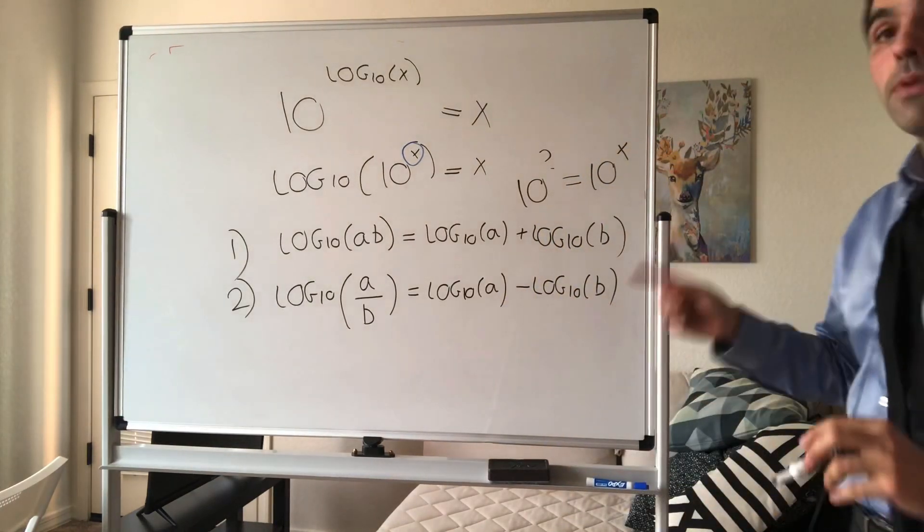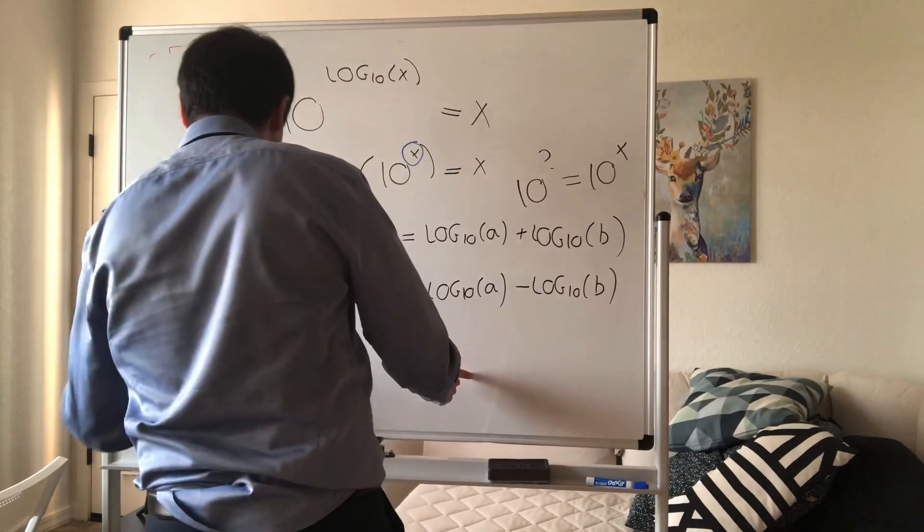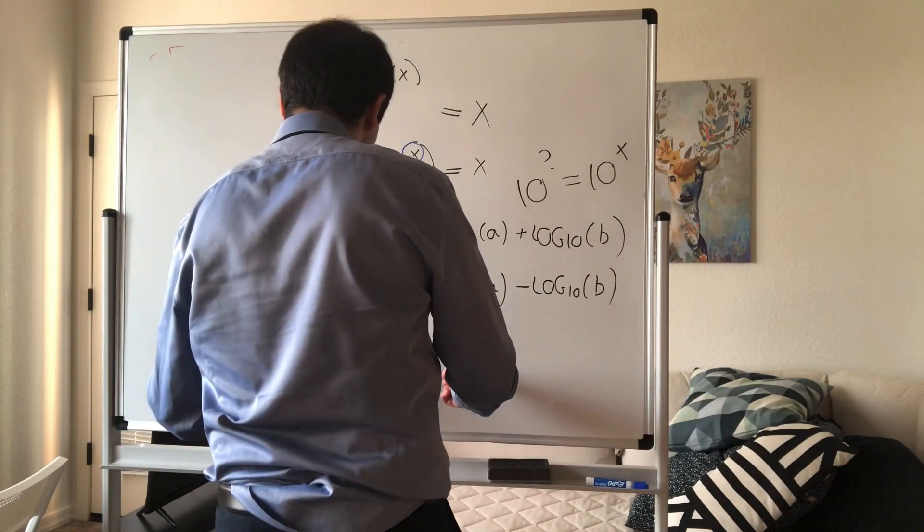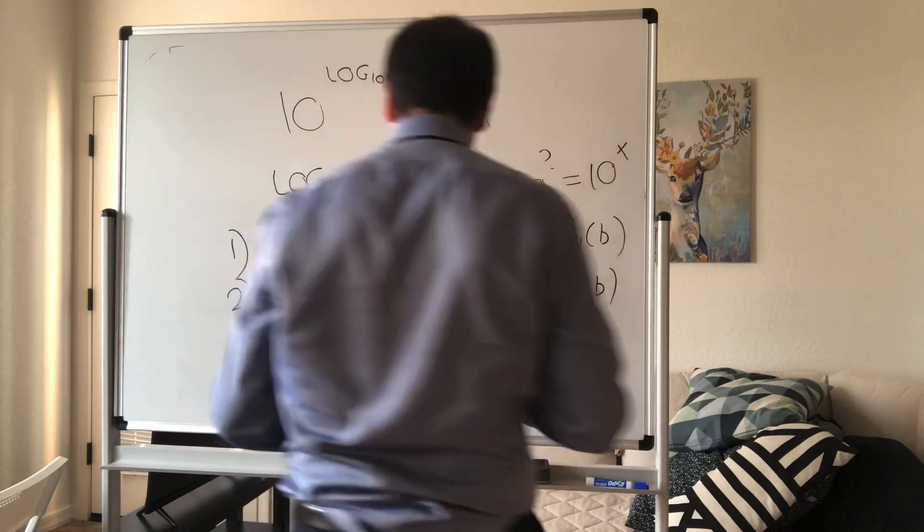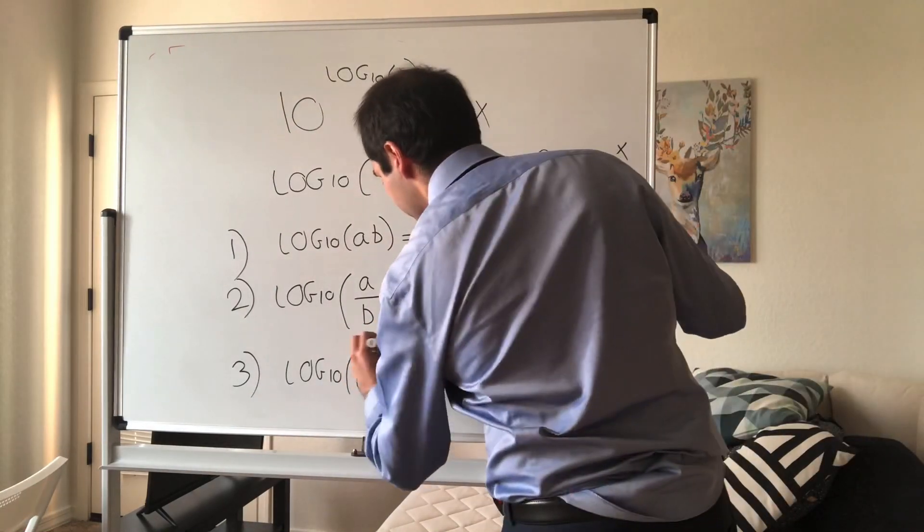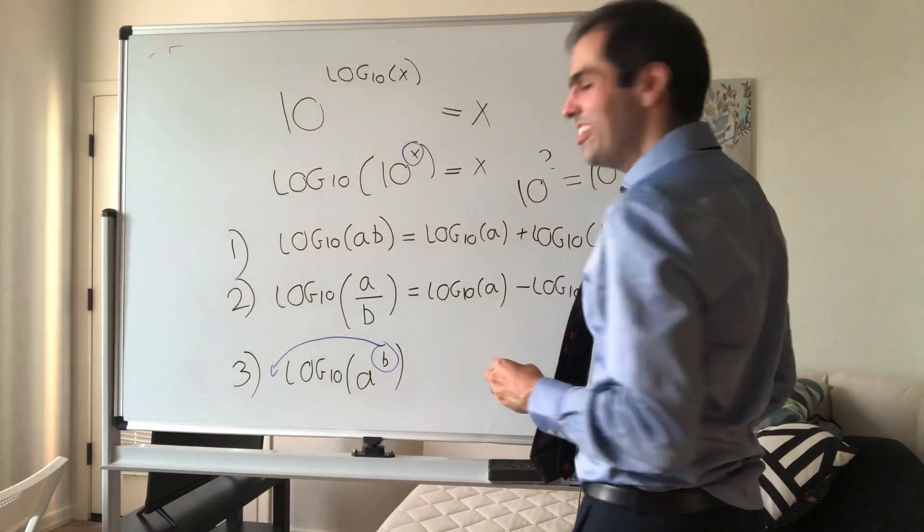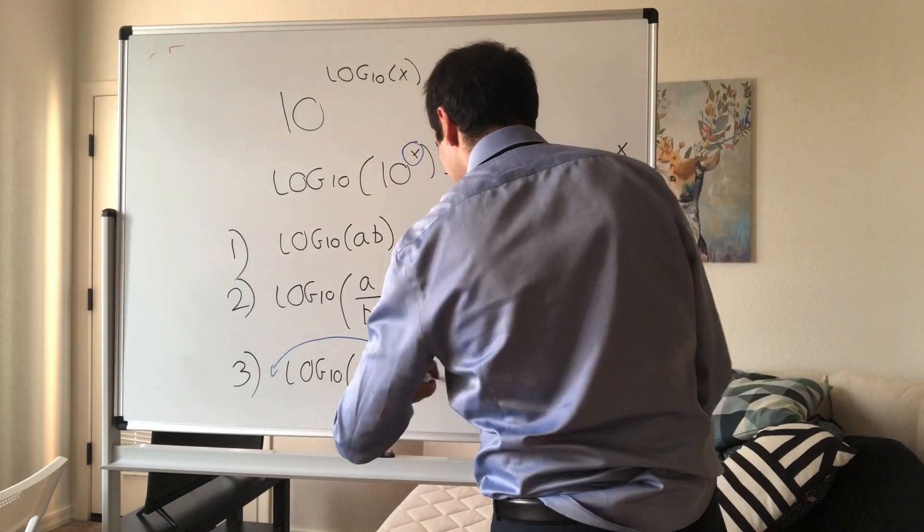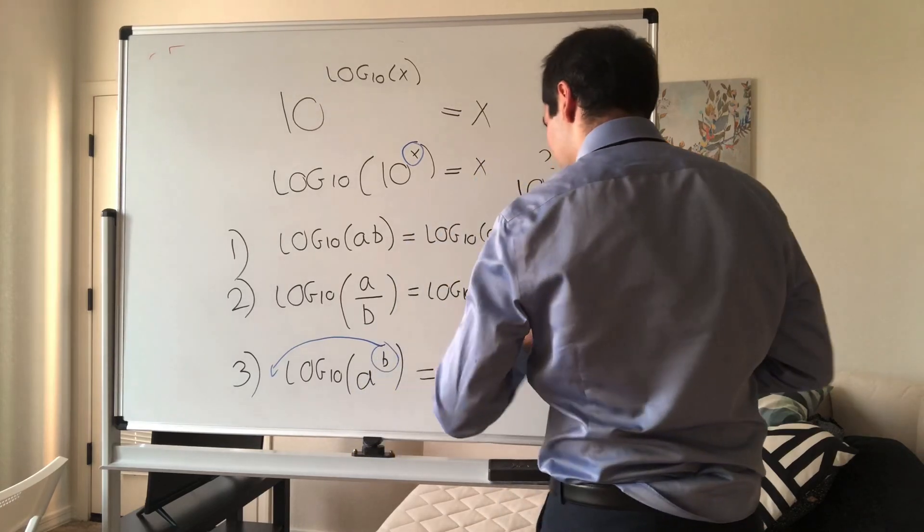And in my opinion, the most important property to know is the exponent property. It turns out whenever you apply log base 10 to A to the B, the B comes out. So it becomes B times log base 10 of A.